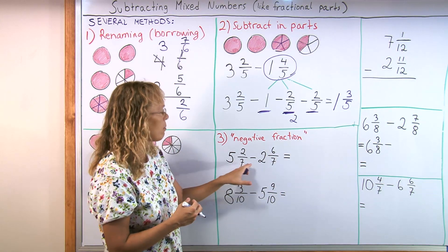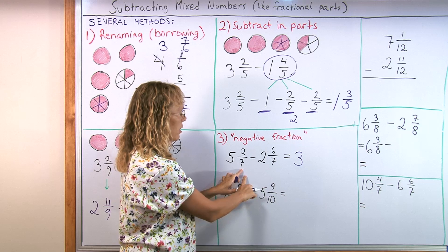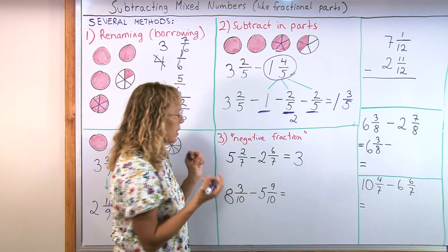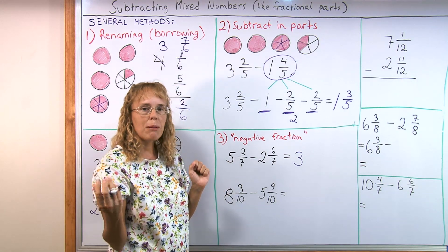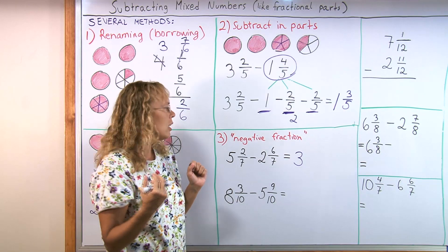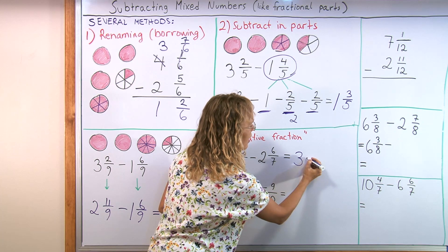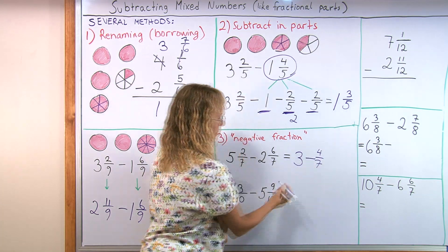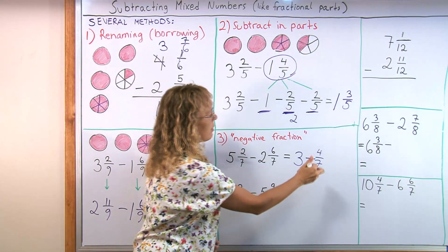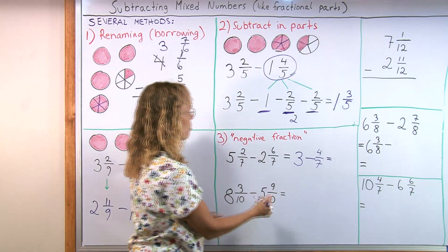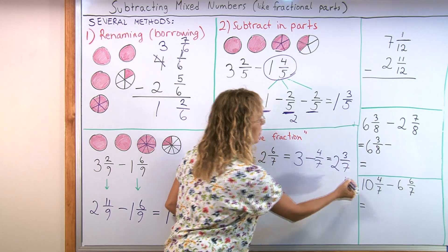And it goes like this. 5 and 2/7 minus 2 and 6/7. You subtract the whole numbers. 5 minus 2 equals 3. Then you subtract the fractions like this. 2/7 take away 6/7. Think of 2 minus 6. 2 take away 6. If you have 2 dollars, you take away 6 dollars. You end up negative 4 dollars. Owing 4 dollars. So 2 minus 6 is negative 4/7. And we write it like this. Negative 4/7. And that becomes now a subtraction problem that we still need to solve. 3 minus 4/7. But it is an easier subtraction problem than this one. It is, we have 2 and then 3/7.